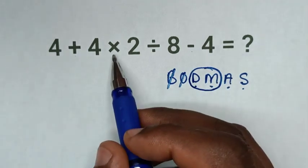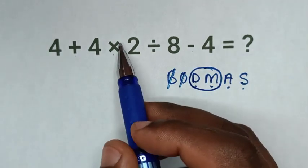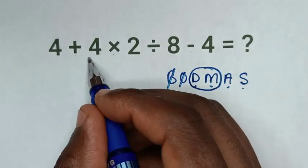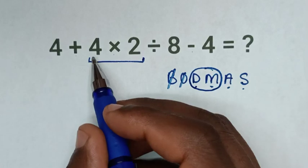So we'll deal with this multiplication first, 4 × 2 which is 8. So it will be 4 + 8 ÷ 8 - 4.